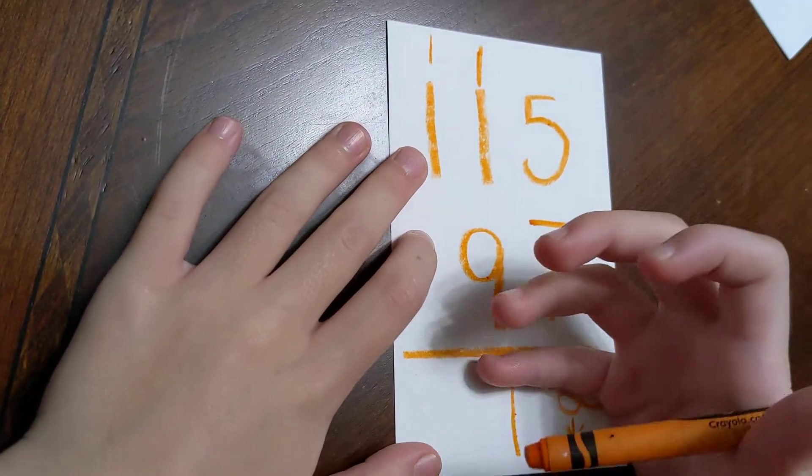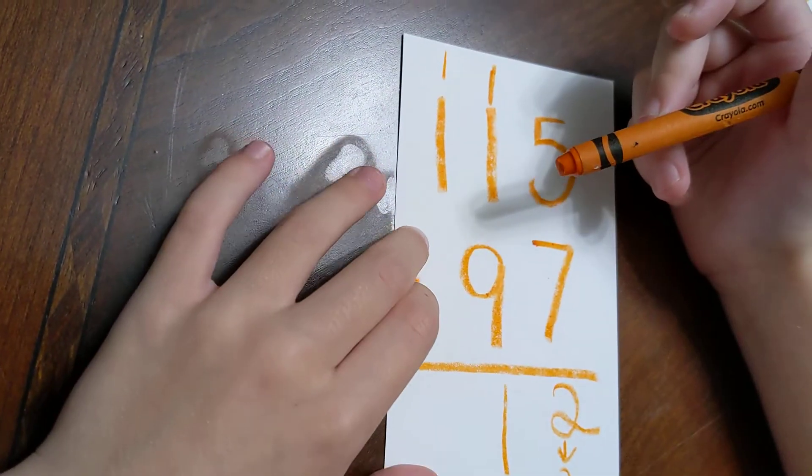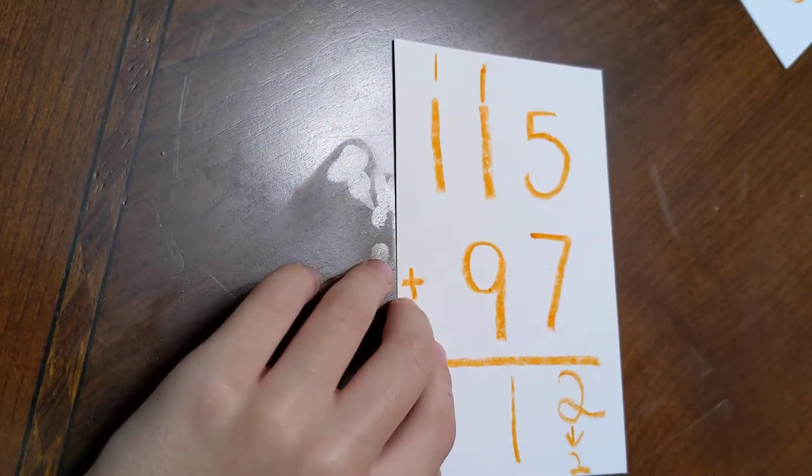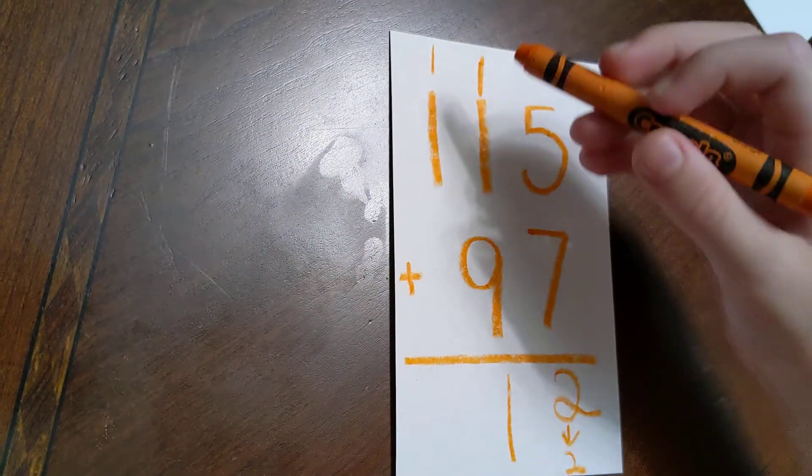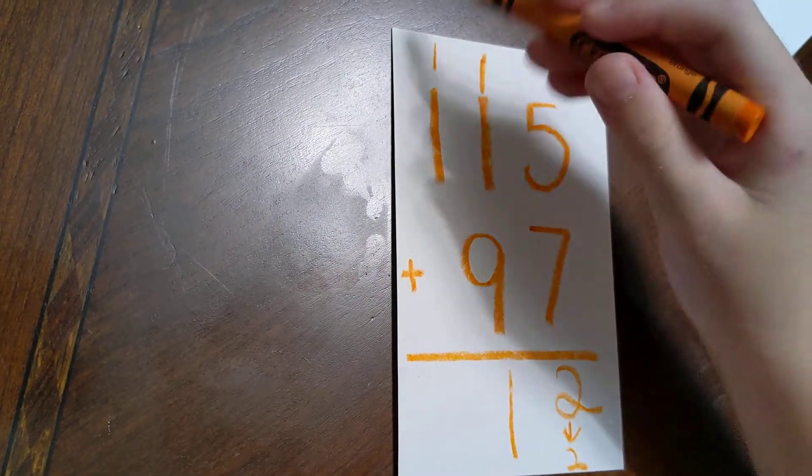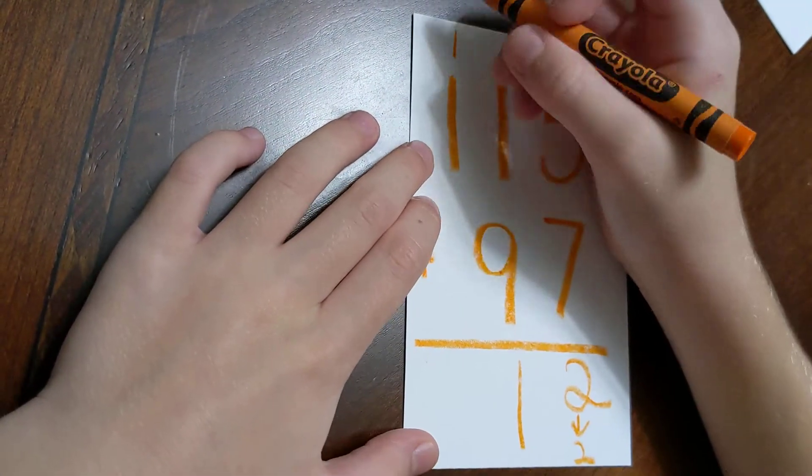Last video, it was actually kind of confusing, but when there's another one in the hundreds place, if it's a two-digit number on the tens, you put it into the hundreds. So, 1 plus 1 is 2.